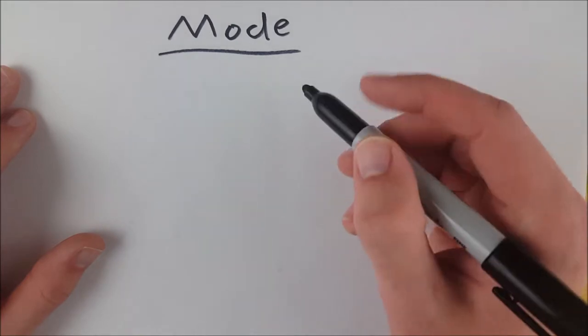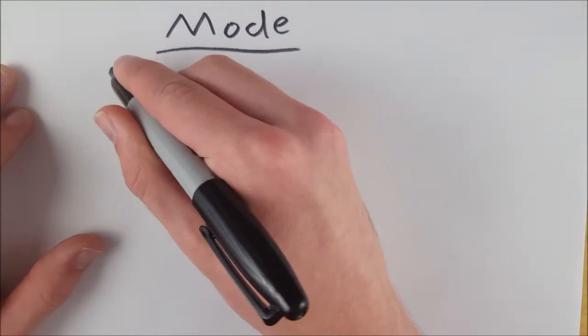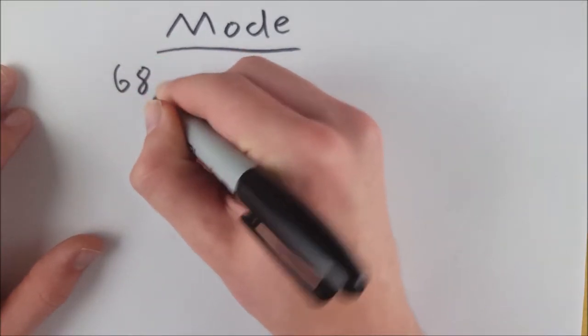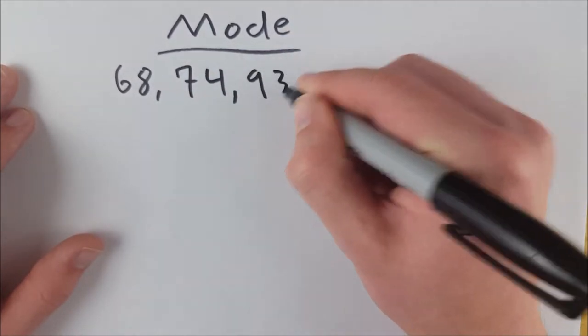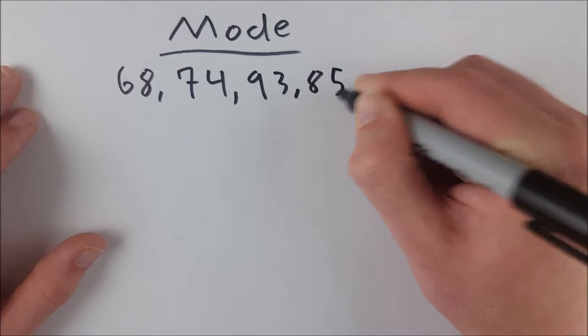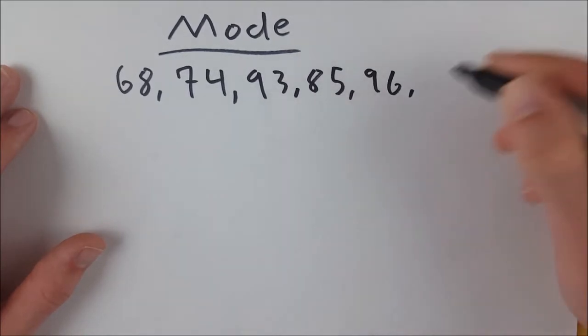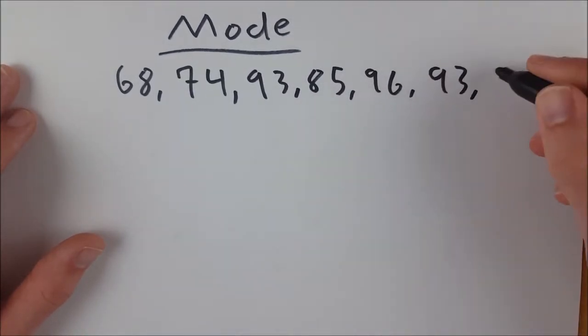So let's say we have a generic example. Let's say we've just got a set of test scores, and the scores we have are 68, 74, 93, 85, 96, 93, and let's say a 72.